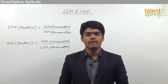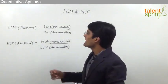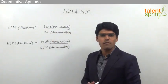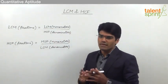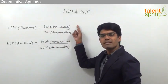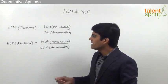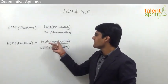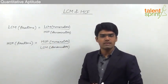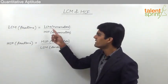Let us now see how to find the HCF and LCM for fractional values. The LCM of fractions can be taken as LCM of numerators divided by the HCF of the denominators. Similarly, HCF of fractions can be taken as HCF of all the numerators divided by LCM of all the denominators.